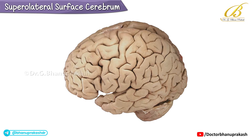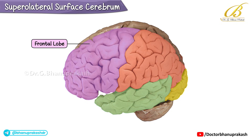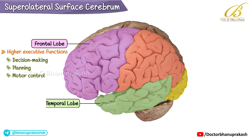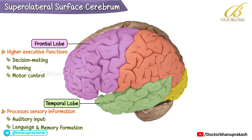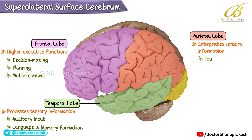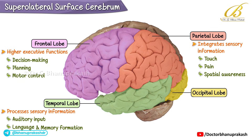Anatomically, the cerebrum is divided into four lobes, each with specific functions, separated by prominent fissures. The frontal lobe is responsible for higher executive functions including decision-making, planning, and motor control. The temporal lobe processes sensory information such as auditory input, language, and memory formation. The parietal lobe integrates sensory information from various modalities including touch, pain, and spatial awareness. The occipital lobe serves as the primary center for visual processing and interpretation.